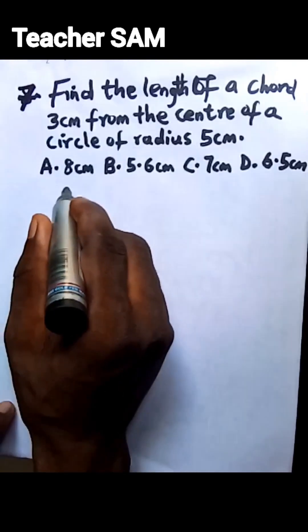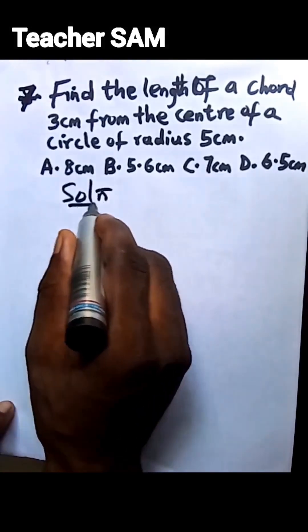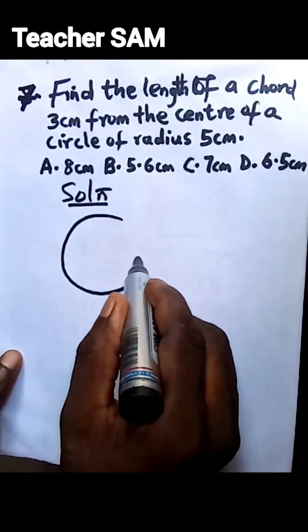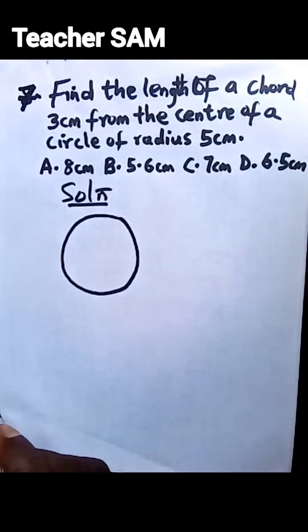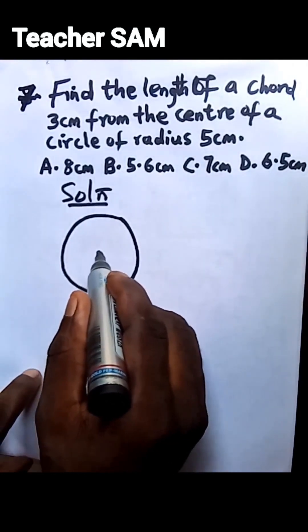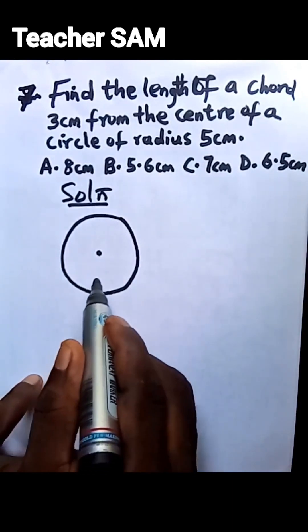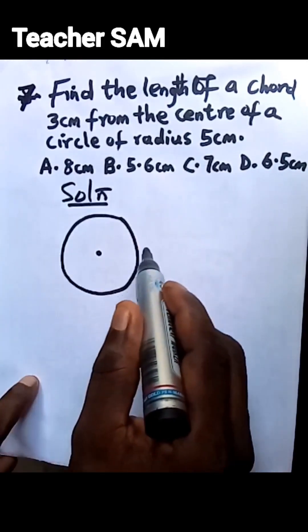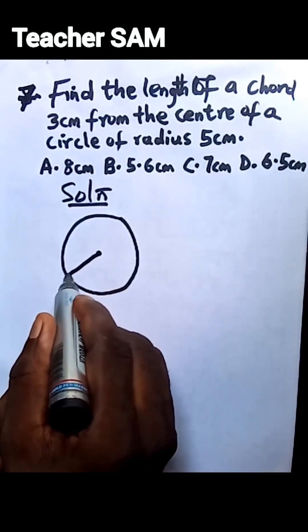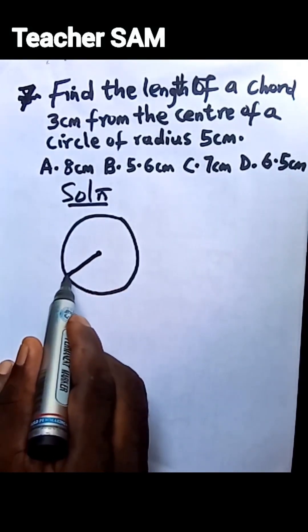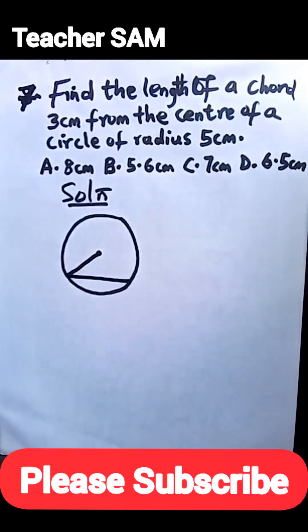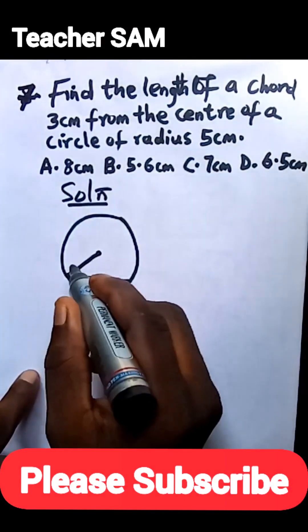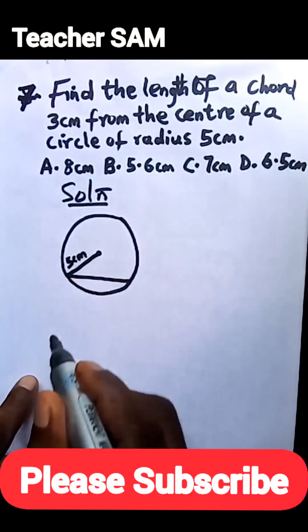Let's get down to business. Let's try to make a diagram for this. Let me make a little sketch of a circle. That's the circle. Then we have a center. Now, any line that runs from the center of the circle to any point on the circumference is a radius. Let's take this to this point — that's the radius. And of course, we know a chord. This is a chord. We have a chord there.